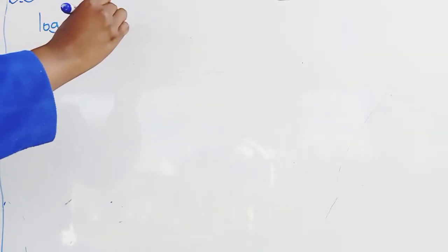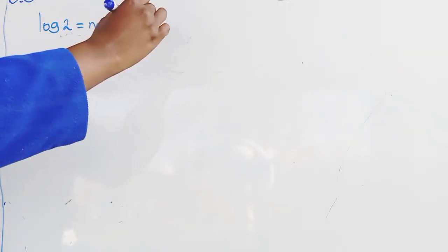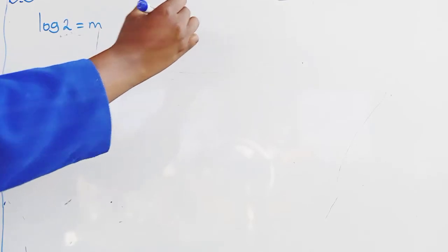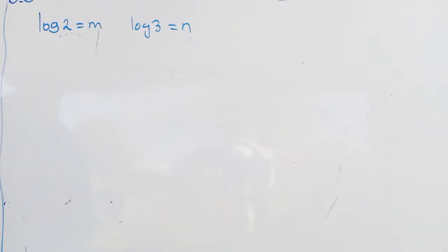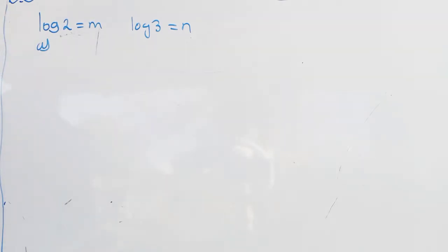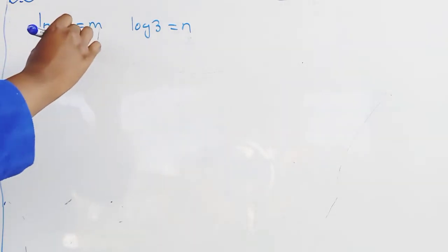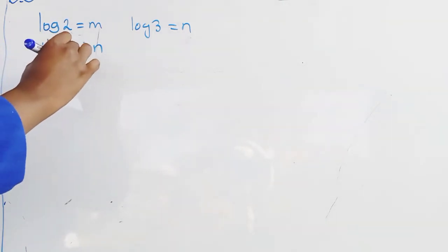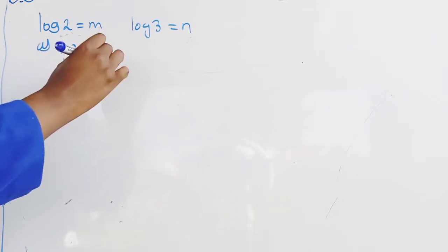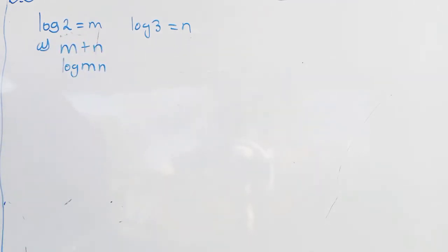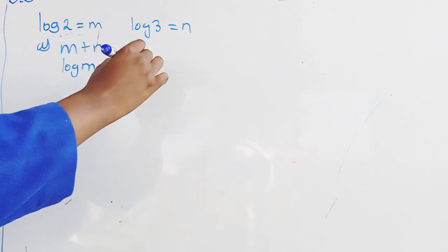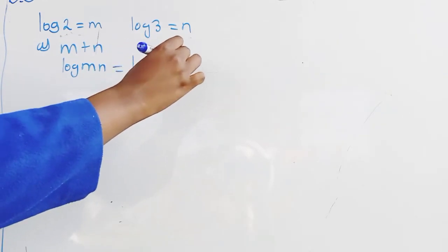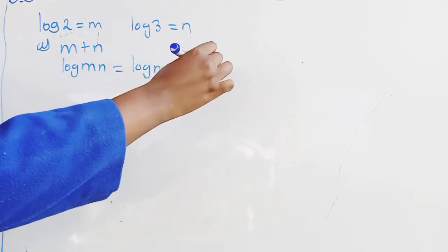Logarithm of 2 is equal to m and logarithm of 3 is equal to n. The first part of the question asks us to express m plus n as a single logarithm. To do this, we need to remember our logarithm law: logarithm of mn simply means logarithm of m plus logarithm of n.